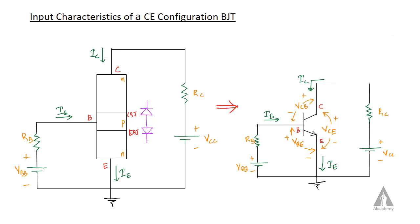In this lecture we are going to discuss the input characteristics of a common emitter configuration BJT. In common emitter configuration, the emitter terminal is common for both the input side and output side. The base is the input terminal and collector is the output terminal. We have a transistor represented as an NPN transistor.